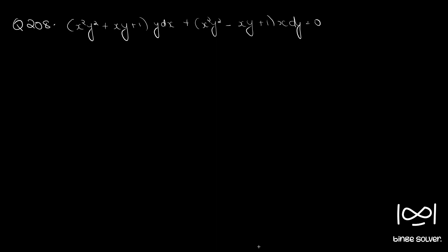Question number 208. The equation is: (x²y² + xy + 1)y dx + (x²y² − xy + 1)x dy = 0. The given differential equation is in the form M dx + N dy = 0. First we check whether the given differential equation is exact using the necessary and sufficient condition: ∂M/∂y = ∂N/∂x.